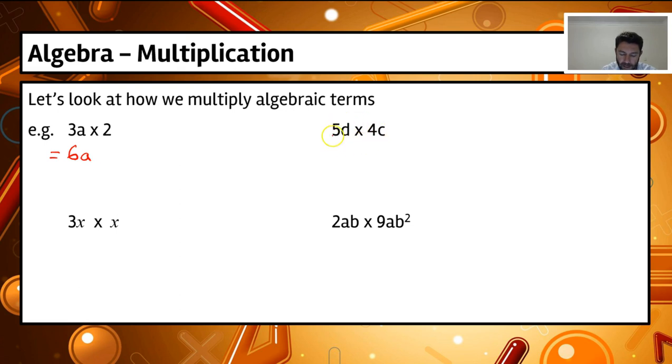In our second example here, we've got 5d times 4c. If we have a look, we get our two numbers there, 5 and 4. Let's break that down: 5 times 4 times d times c. So that one equals 20dc.